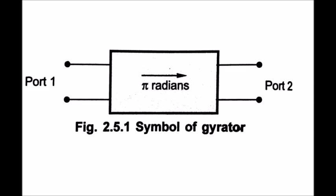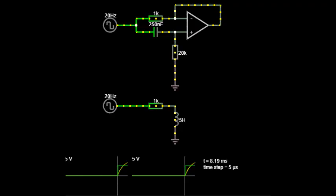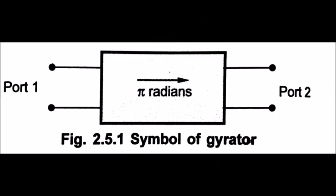Gyrator as inductor: The main application of a gyrator is to reduce the size and cost of a system by removing heavy, bulky, and expensive inductors. For example, RLC band-pass filter characteristics can be realized with capacitors, op-amps, and resistors without using inductors. Graphic equalization is also possible using gyrators. There are two types of gyrators: passive gyrators and active gyrators.